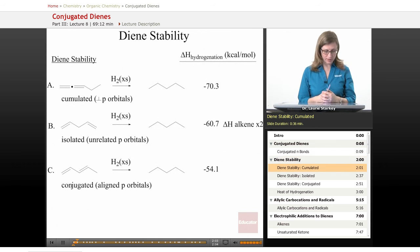Now let's talk about the nature of being conjugated and what kind of stabilization this resonance imparts, and how can we get some evidence for that. Let's take a look at three different types of dienes, one example each.